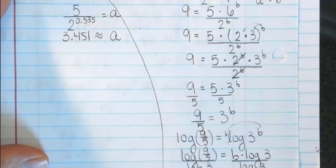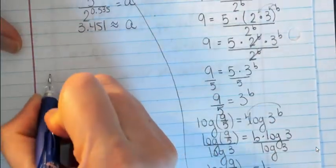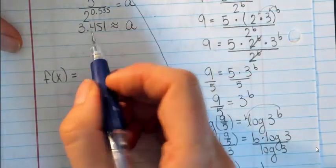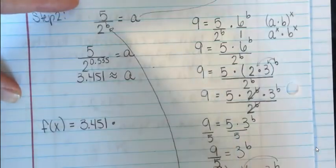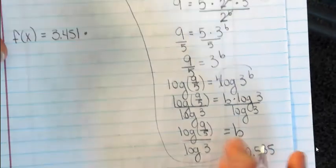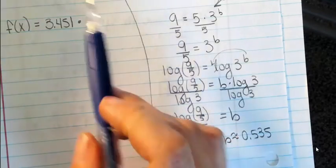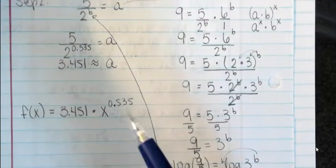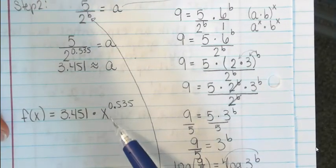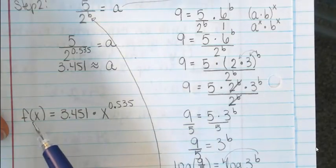Now I can use my a and b to write the final function. So f of x equals 3.451 times x to the 0.535 power. That's the power function. Remember: in a power function, the base is your input variable x — it's your independent variable, the numbers you choose to plug in to get your dependent variable out.